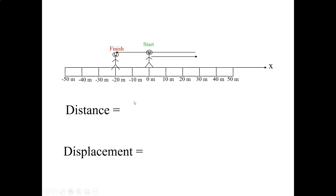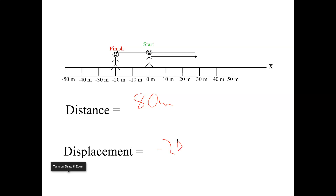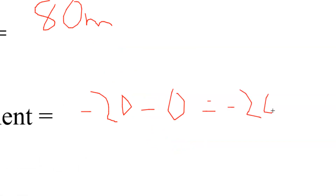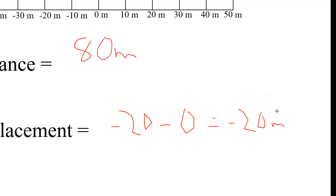Let's find the distance and displacement for this one. I start at zero, go to 30, then go back to minus 20. The total distance traveled is 80 meters. My displacement is final minus initial: minus 20 minus zero equals minus 20 meters. So my distance traveled is 80 meters and my displacement is minus 20 meters.